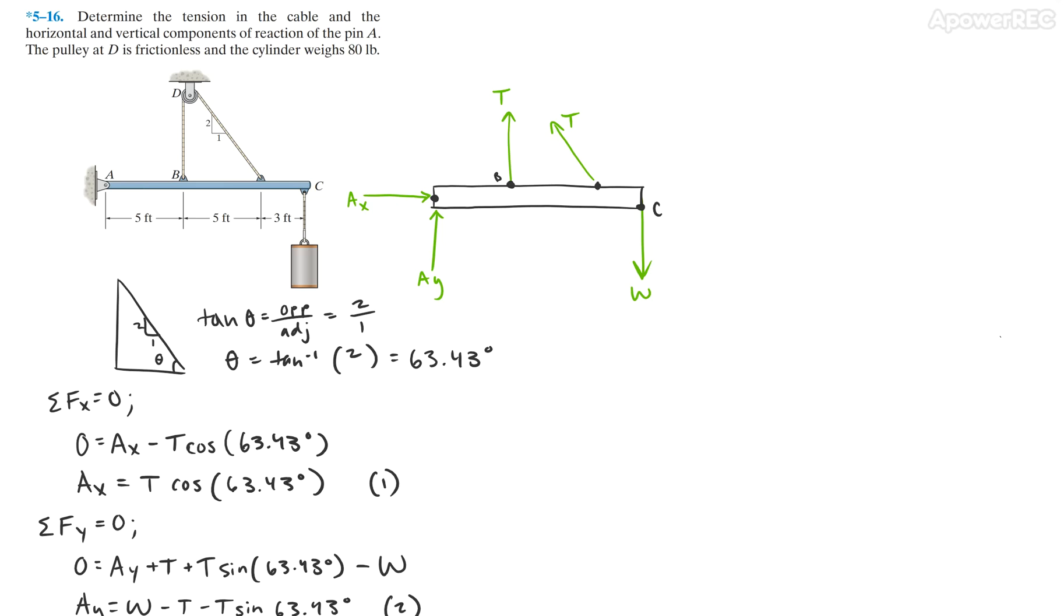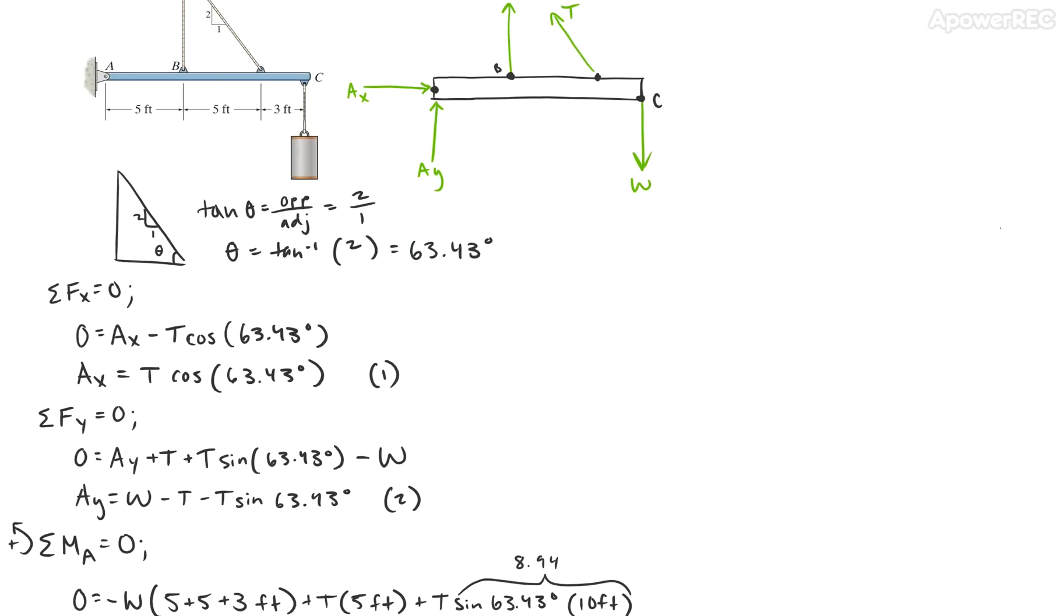From this problem, we know that the tension throughout the cable is going to be the same because it is frictionless at D. The only thing that's different is how the tension of the cable interacts with the beam. Therefore, this gives us three unknowns: AX, AY, and T, which is perfect because we have three equations of equilibrium.